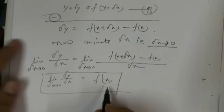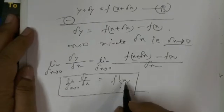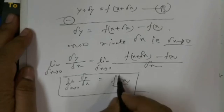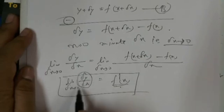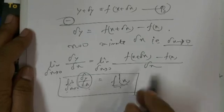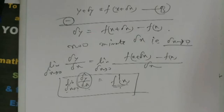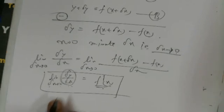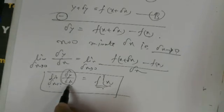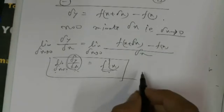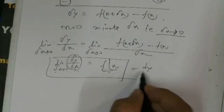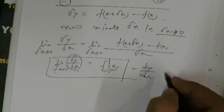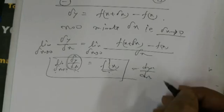This is called the derivative of a function, f'(x). The differential coefficient f'(x) is the limiting value of the ratio delta y upon delta x when delta x tends to 0. It is also the rate of change of y with respect to x, that is dy/dx — the limiting value of delta y upon delta x when delta x tends to 0.